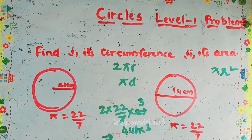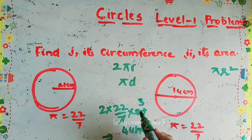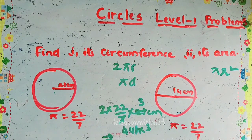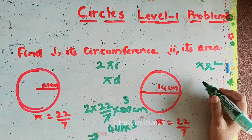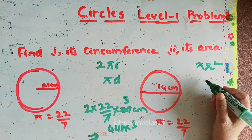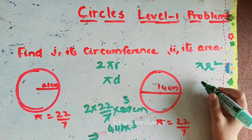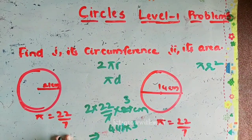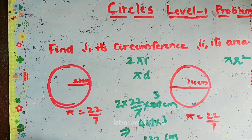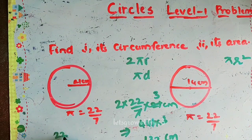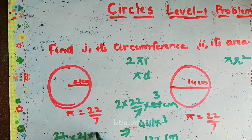I used 2πr because the value given is radius, not diameter. Next, we find the area for the same circle. Area is πr², so π is 22/7 and radius is 21 centimeters. We multiply 22/7 times 21 times 21, taking out common factors.